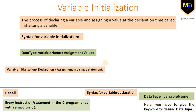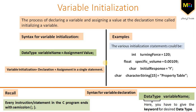To understand it completely, let's look at some examples of variable initialization. If you would like to initialize a variable of integer type, you write: int space, the variable name (e.g., turning_force), then the assignment operator, then the integer value, here it is 120. Similarly, for a floating point number, you use float, then the variable name (e.g., specific_volume), then the assignment operator, then the value.